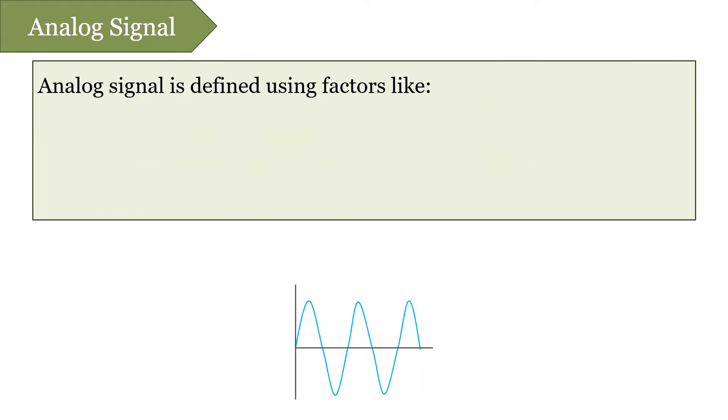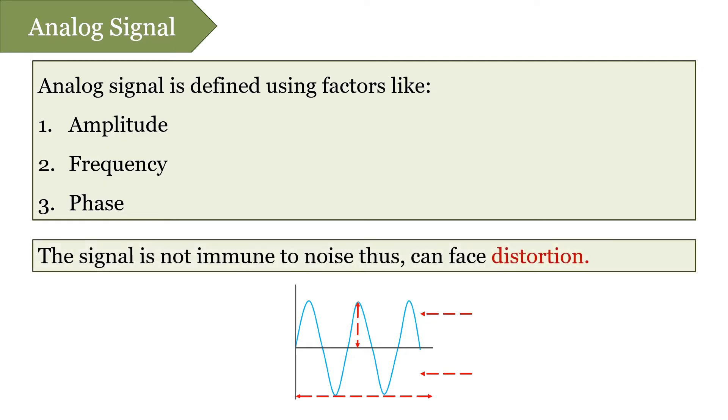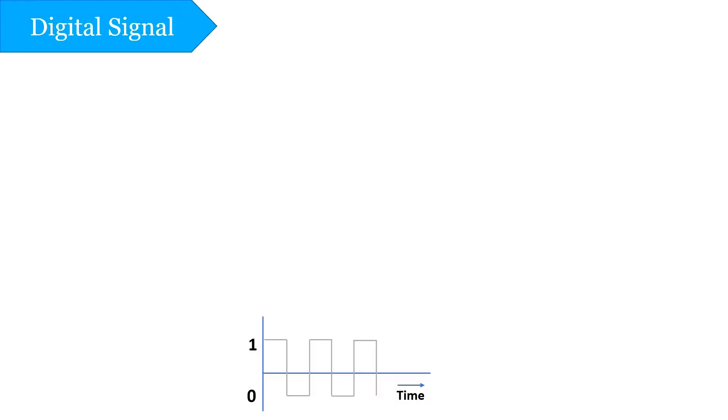We can describe analog signals with the help of three parameters: amplitude, frequency, and phase. Analog signals are not immune to noise, thus they can face distortion. Now let us proceed with the digital signal.